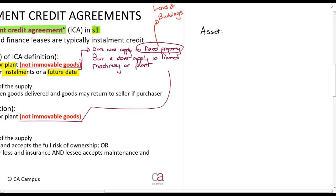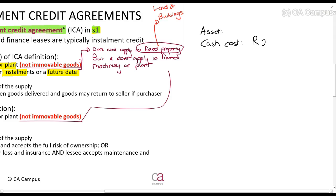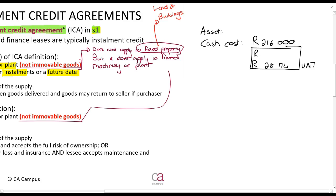Let's say I want to buy an asset. The cash cost of this asset is 216,000 rands. That 216,000 will comprise of 28,174 rands VAT — that is the all-inclusive VAT calculated — and the difference is the ex-VAT amount of 187,826 rands ex-VAT.